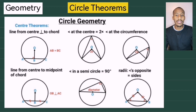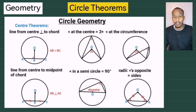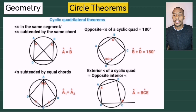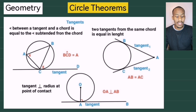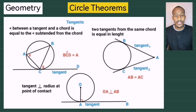On the screen right now, you'll see all the theorems you'll need to know for this video. First we have our center theorems: angle at the center is two times the angle at the circumference, line from center perpendicular to chord bisects the chord, angle in a semicircle, and radii which creates angles opposite equal sides. Then we have our cyclic quad theorems: opposite angles add up to 180, angles in the same segment, exterior angle of a cyclic quad, and equal chords subtend equal angles. Lastly, we have our tangent theorems: the tan chord theorem, two tangents from the same point are equal in length, and radius perpendicular to tangent.